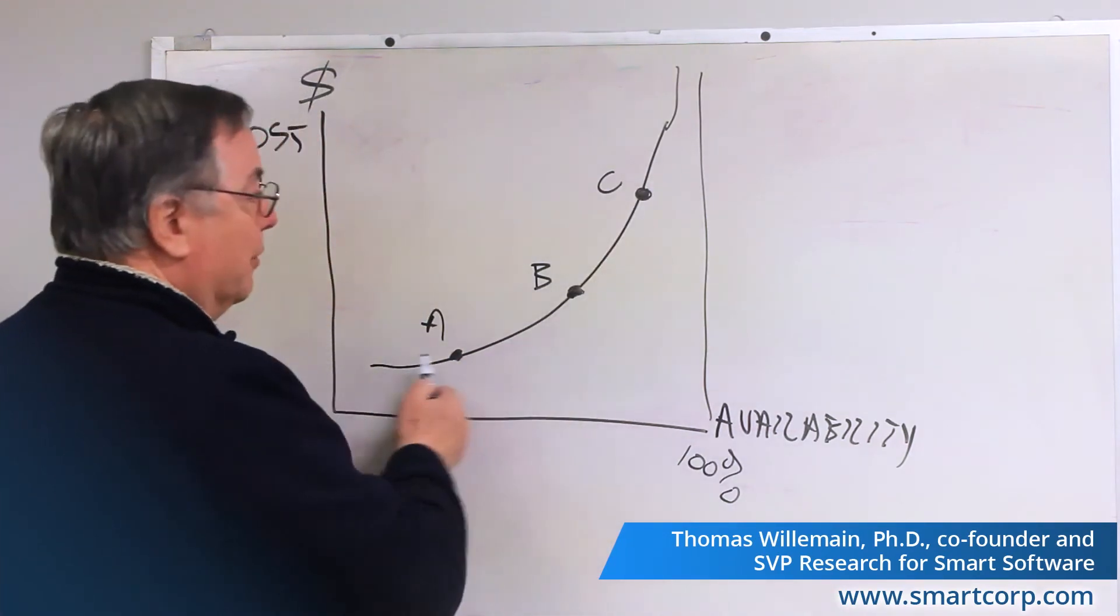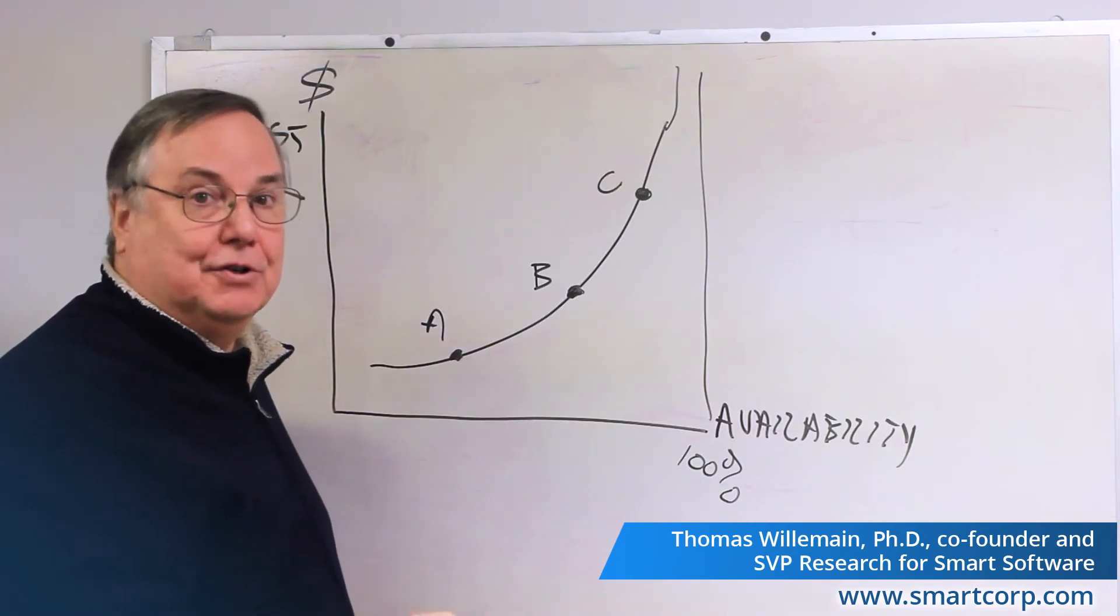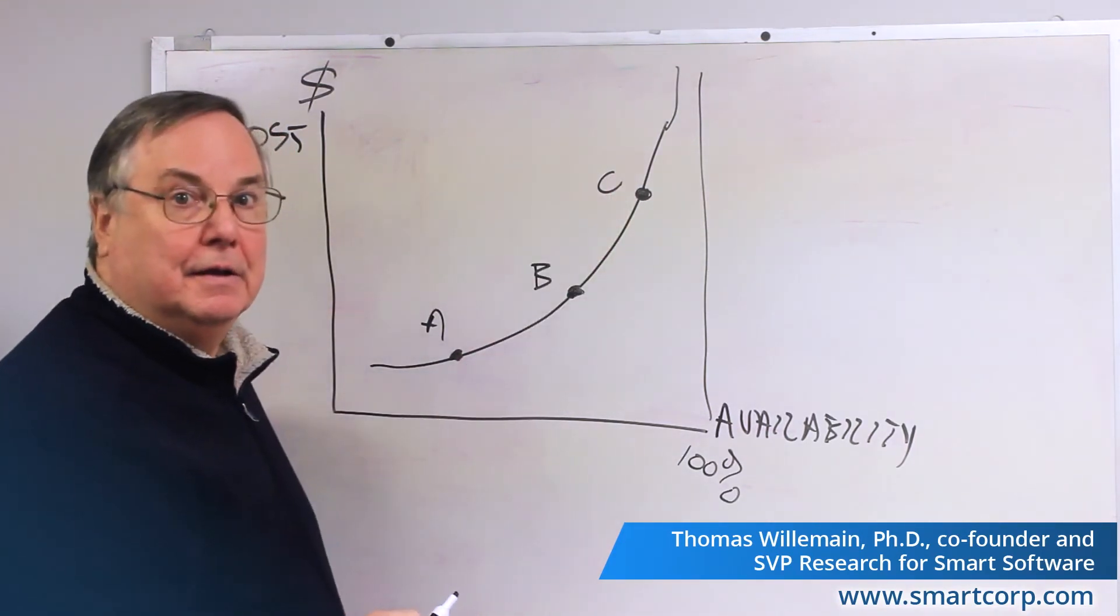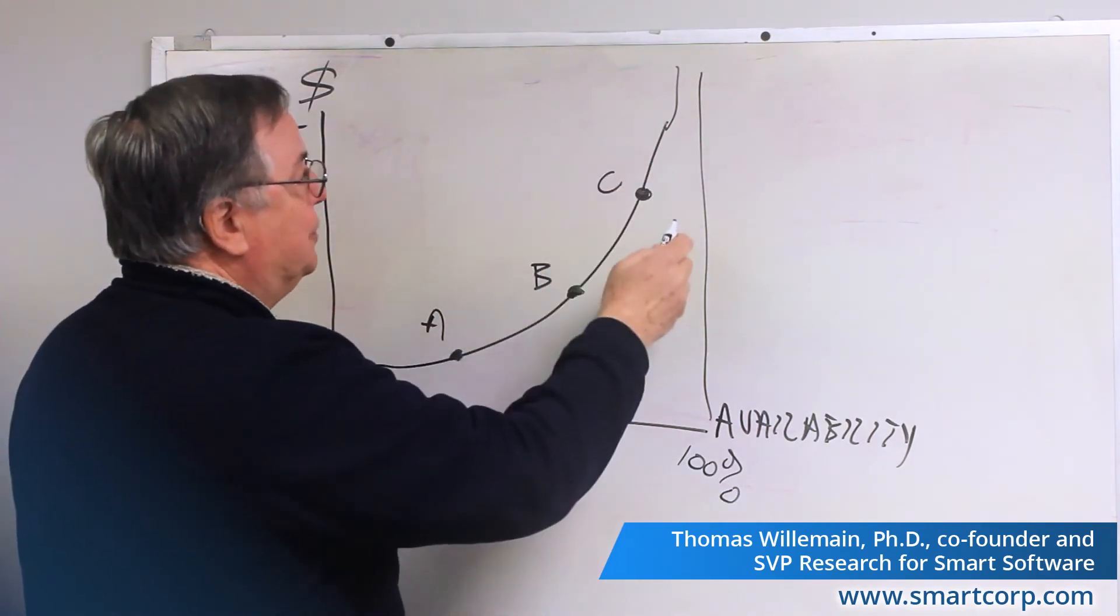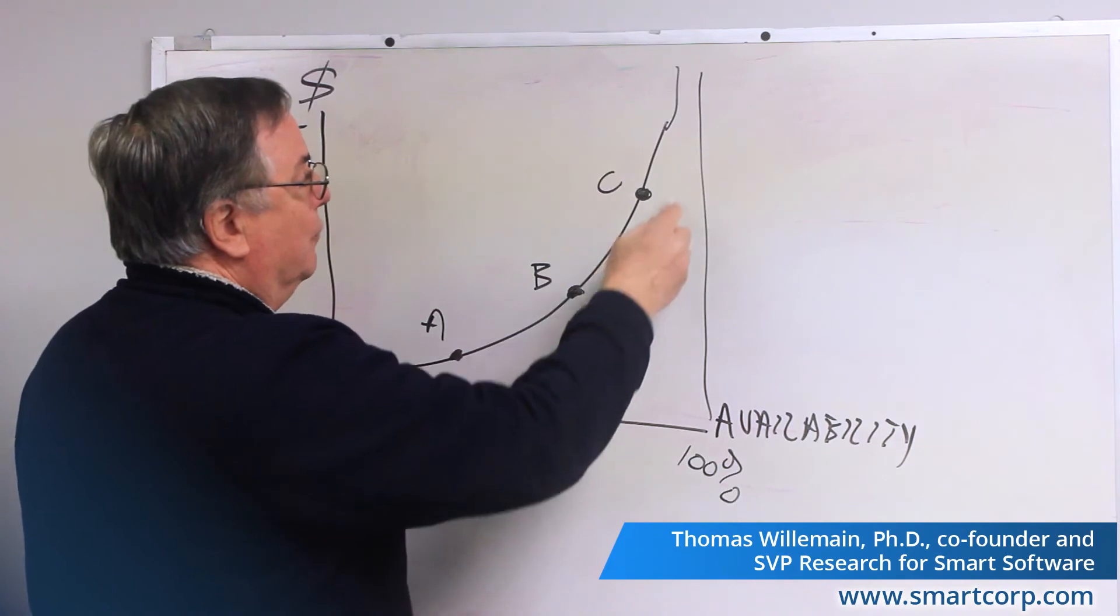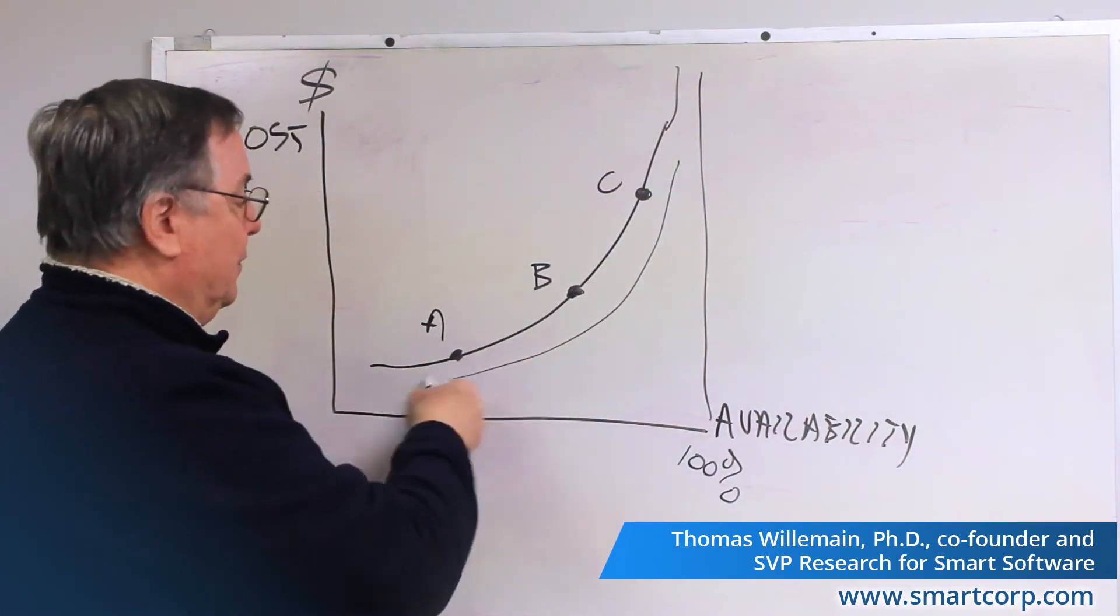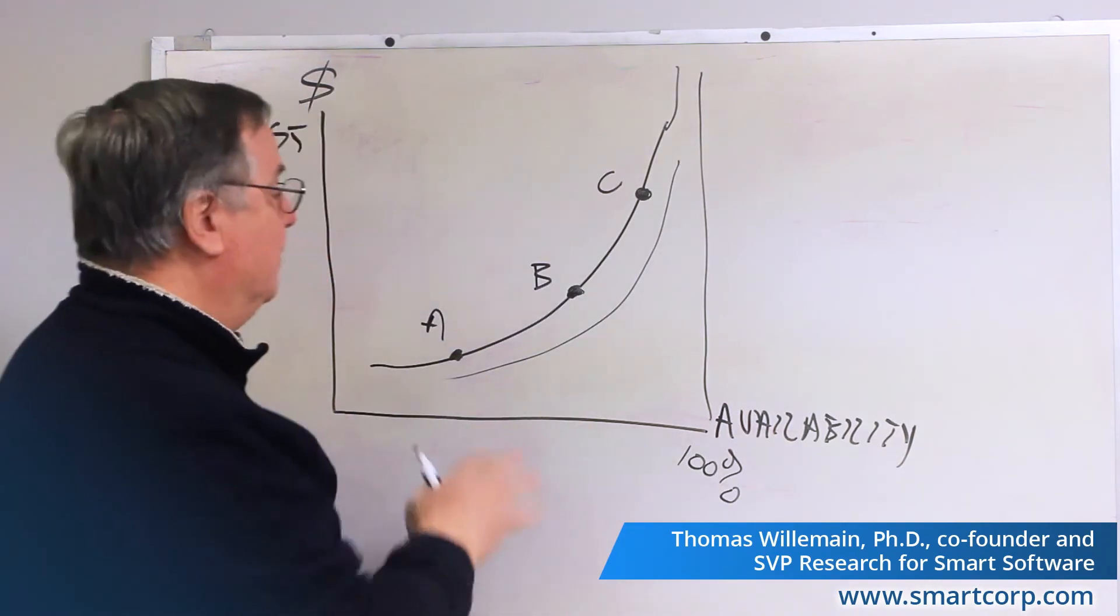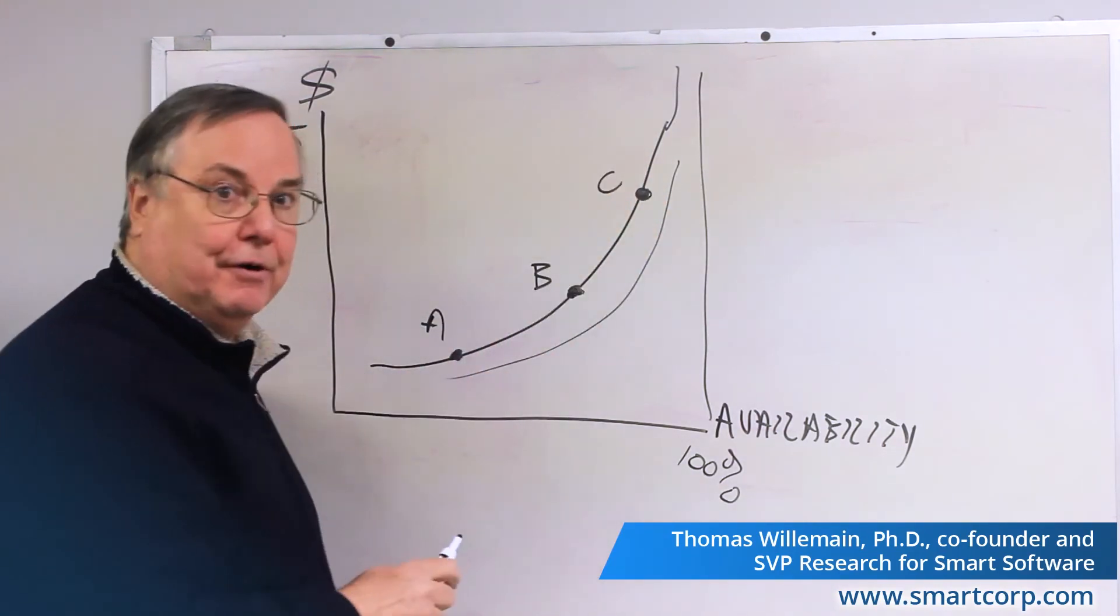So your goal in managing an inventory policy, and even in choosing one, is to decide which curve you're on. And with certain technological improvements, you could actually shift the curve. So a better curve would be this one, where every level of availability is actually cheaper. That's a separate topic. But whatever you're doing now, without changes, puts you someplace on this curve.